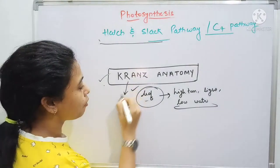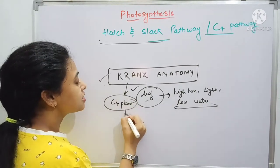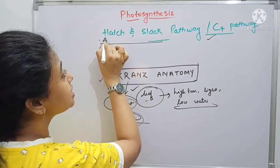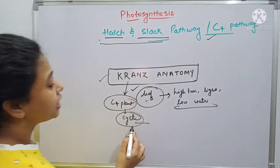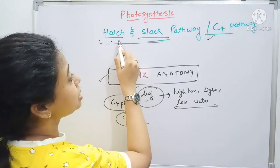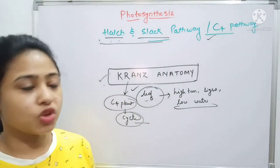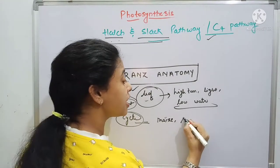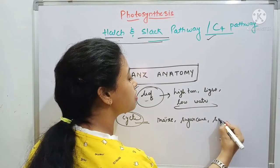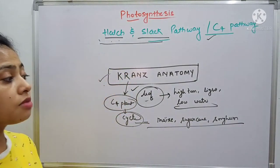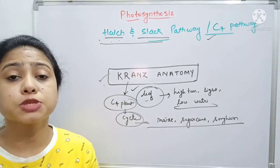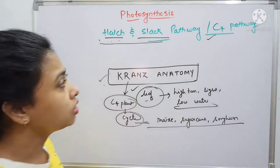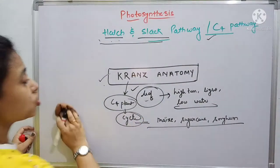This Kranz anatomy is found in a special type of plant. Those are called C4 plants, and the cycle that occurs in this C4 plant is known as the C4 pathway, or it is given by scientists named Hatch and Slack — that is why it is also known as the Hatch and Slack pathway. Examples of such plants include maize, sugarcane, and sorghum. They are plants which come under the category of C4 plants and are responsible for maintaining the C4 cycle and performing the Kranz anatomy.